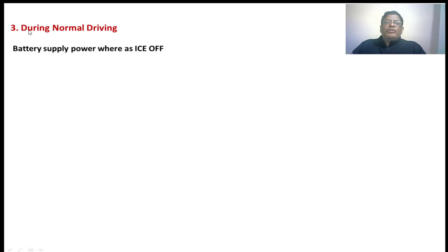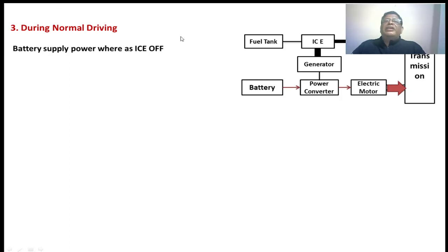In the third stage, during normal driving — in the case of IC engine dominated, during normal driving the IC engine supplied power to the vehicle. But in the case of EV-dominated, nothing but electric motor-dominated, whatever power is required to the vehicle during normal driving will be supplied by the battery only, where the IC engine is off. This mode of operation is the only difference between IC engine-dominated and electric motor-dominated; all remaining modes are the same in both types. In this diagram, only the battery is giving tractive power to the vehicle, where the IC engine will be off.